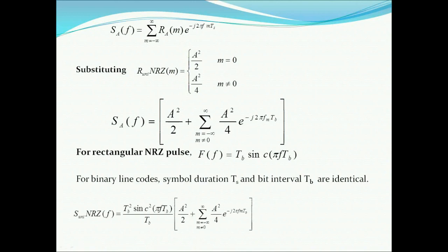Substituting into the power spectra equation for unipolar NRZ, we get S_unipolarNRZ(f) = (A²/4) · Tb · sinc²(πfTb) · [1 + summation m = −∞ to ∞ of e^(−j2πfmTb)].